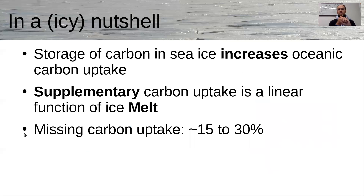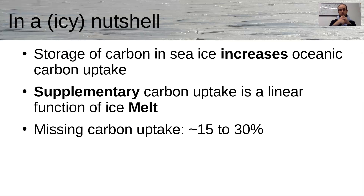To summarize: the storage of carbon in sea ice increases the oceanic carbon uptake, and this increase is a linear function of ice melt. Using that, we can estimate from other model outputs how much those models are missing in terms of carbon uptake. My estimates suggest it's comprised between 15% and 30%, which is a high value. Thank you for listening, and I'm happy to take any questions.